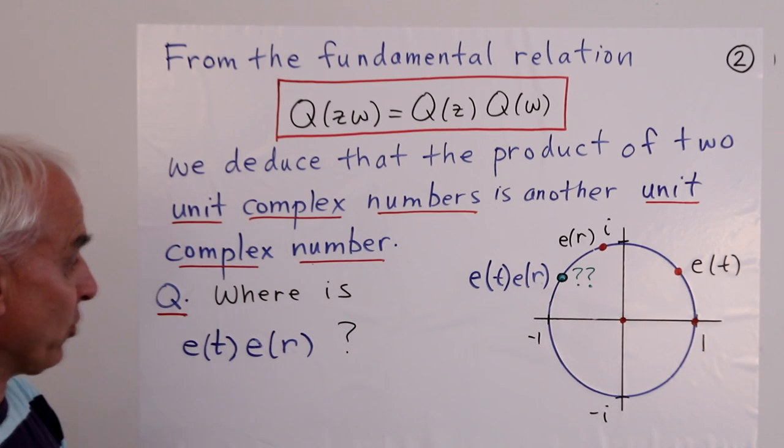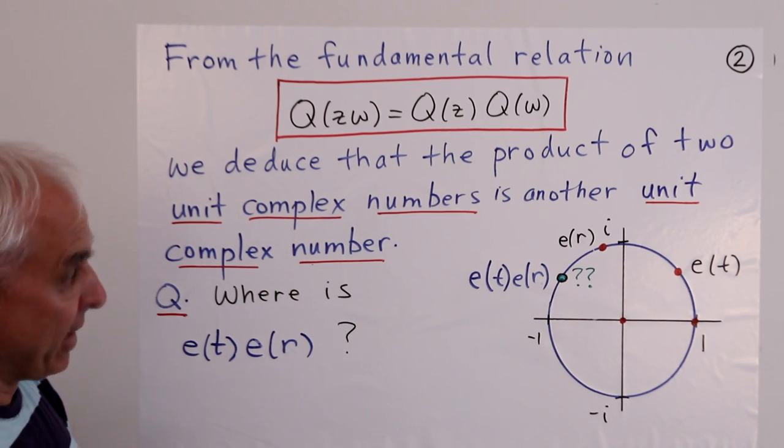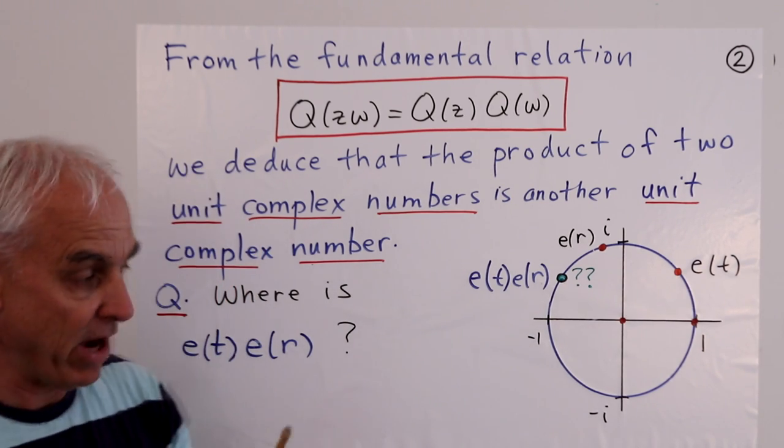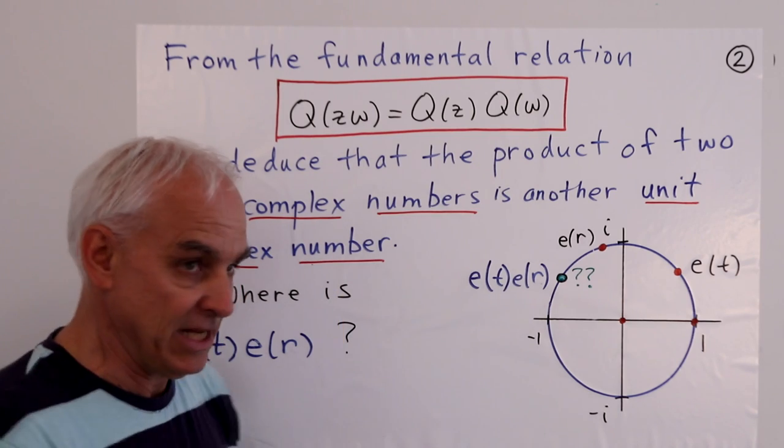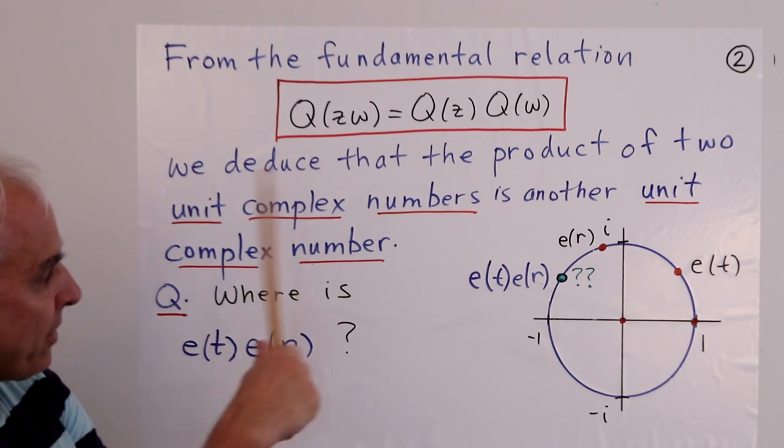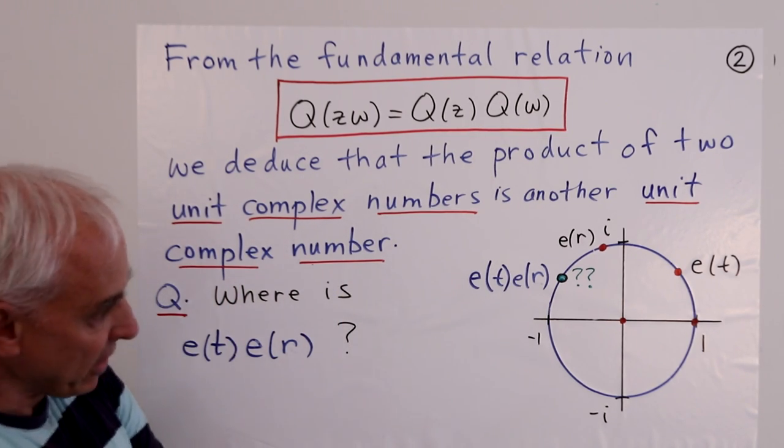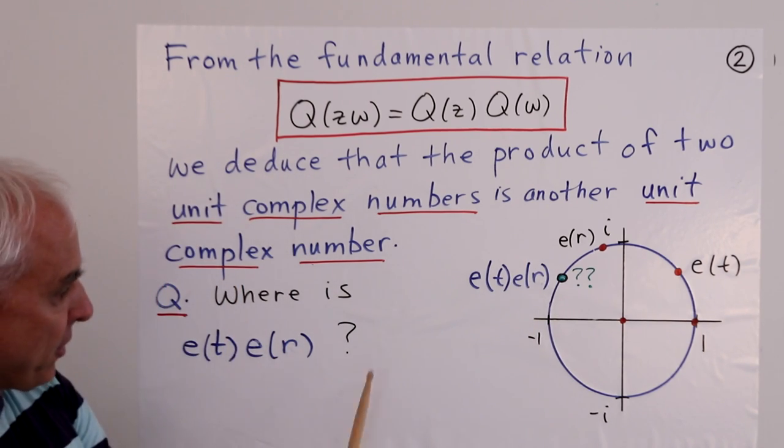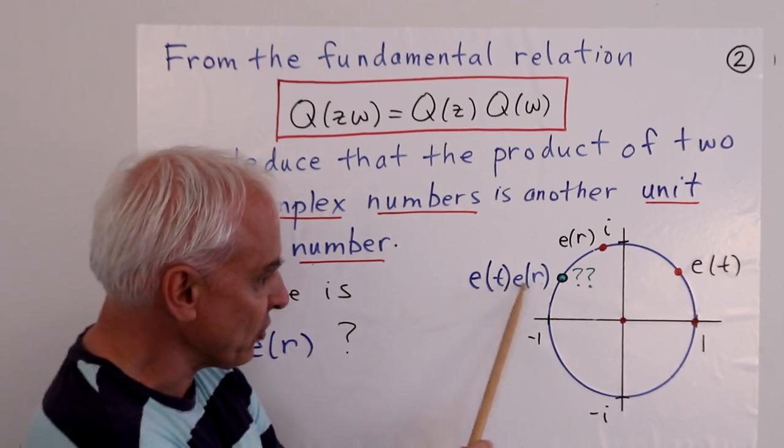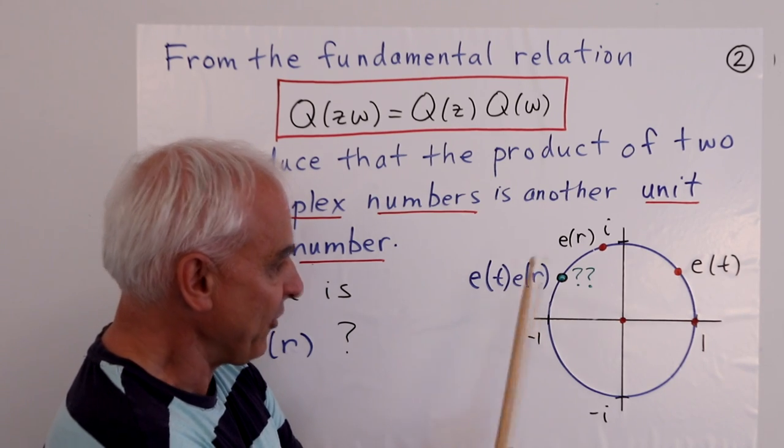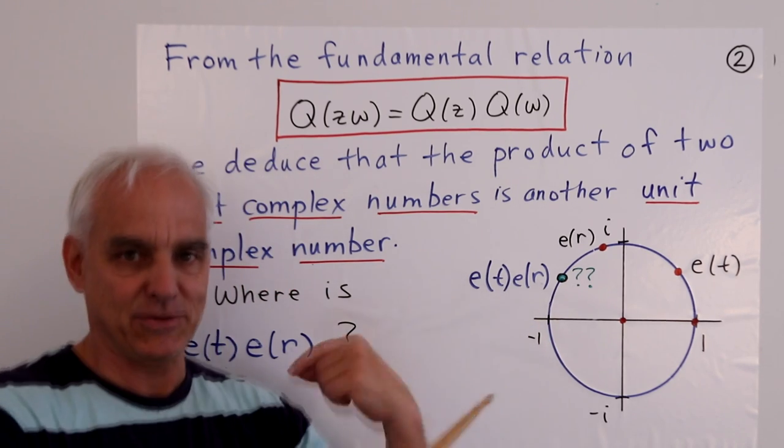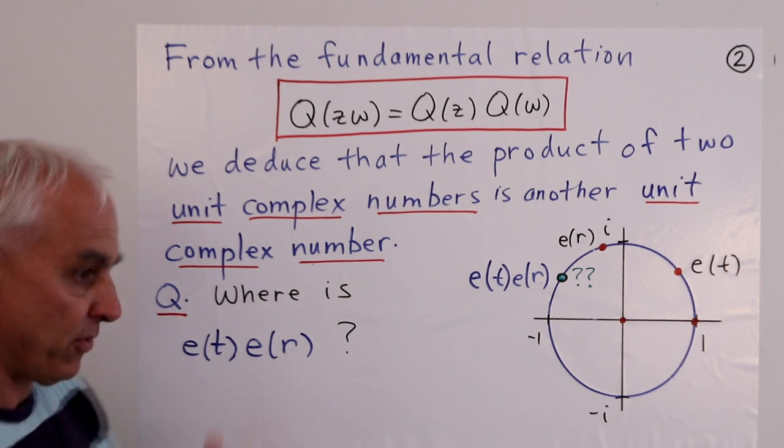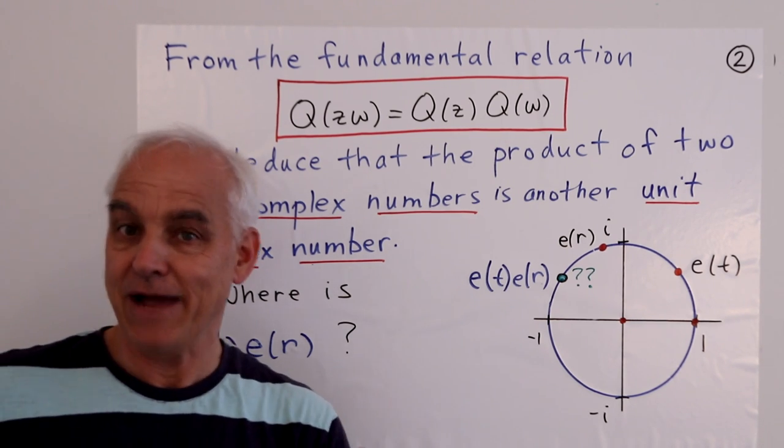This brings us to a very natural and interesting question. If our first number is e(t) and the second number is e(r), then first of all, geometrically, where should the product be? And how do we describe this position algebraically as well as geometrically? So where is e(t) times e(r) both geometrically and algebraically?